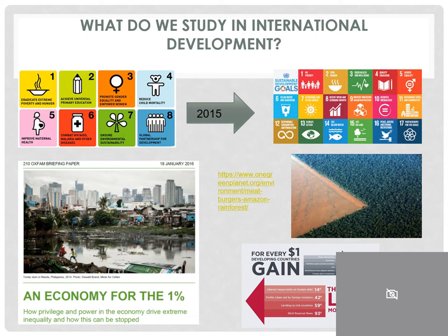On the bottom right you see also a figure that shows a little bit the relationship between the global north and the global south. This picture shows how the structure of international aid has actually had the long-term impact of bringing more money out of the global south rather than putting money into the global south. This over time continues to reinforce the wealth inequality between these parts of the world, and one of the things we look at in this course is how this structure of aid has developed and how it's maintained over time.